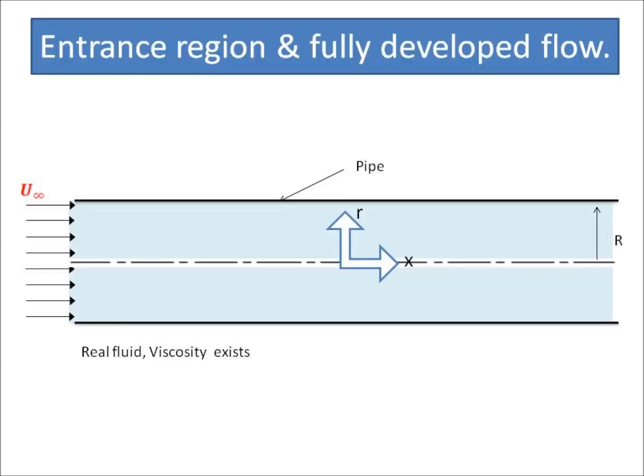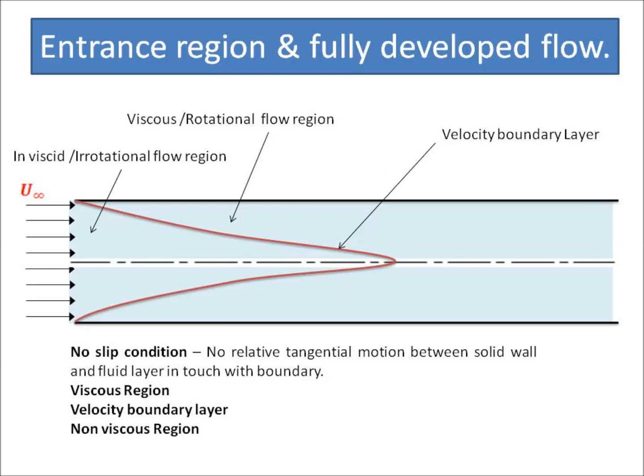Let us start with the first lecture of internal flow on the topic: entrance region theory. We will see the flow physics behind the developing flow region and fully developed flow region for flow through a pipe. Consider a pipe with radius R or diameter D. The liquid with a uniform velocity u-infinity enters the pipe. The liquid is a real liquid having viscosity mu. At the entrance point, flow velocity is constant at every point.